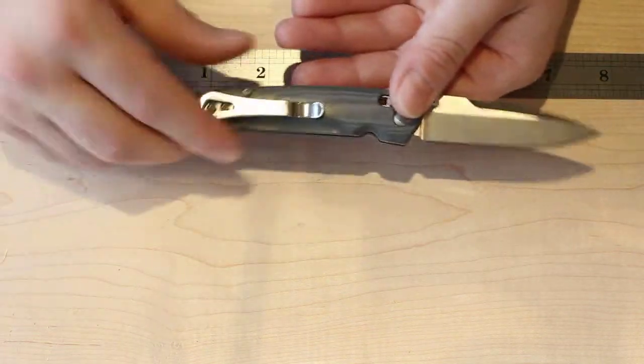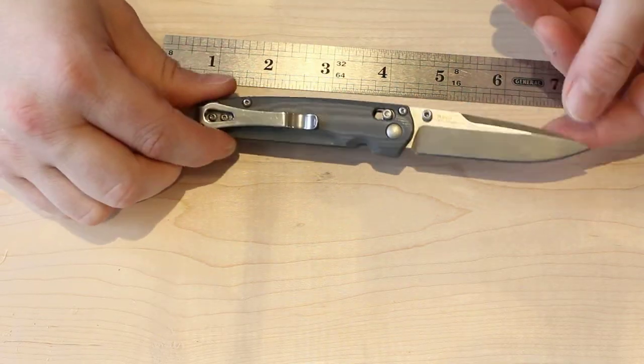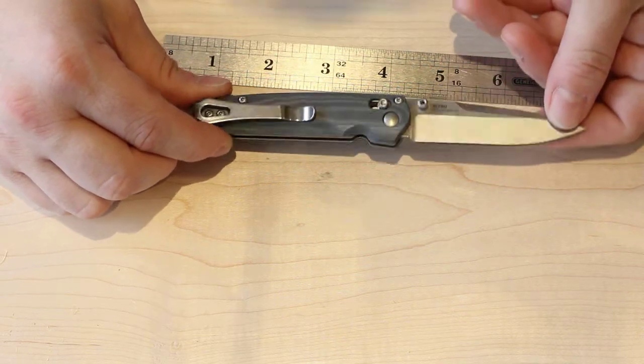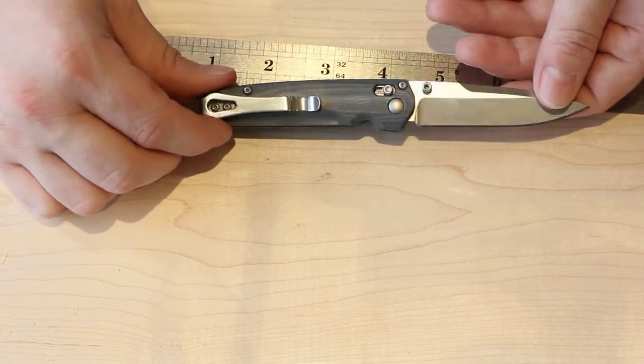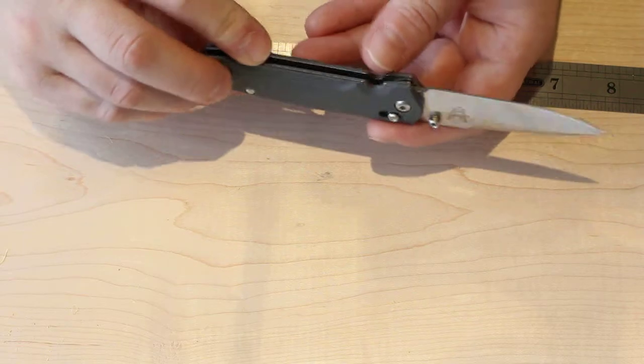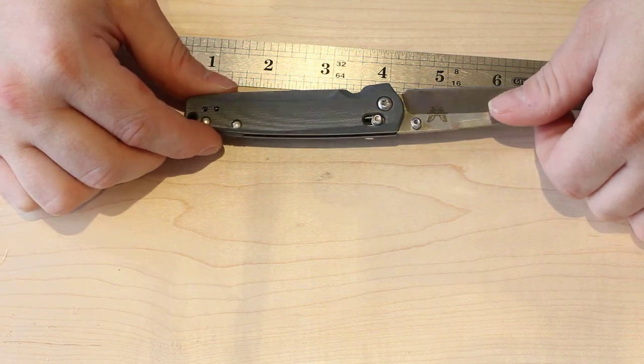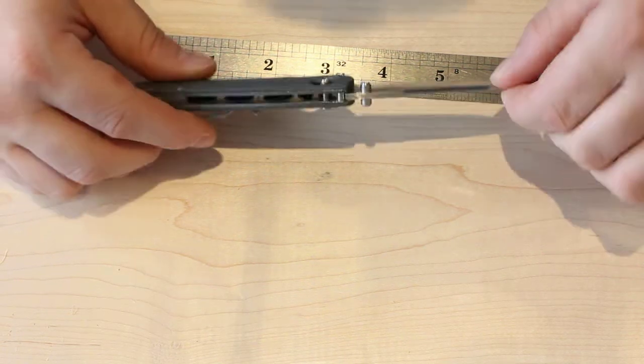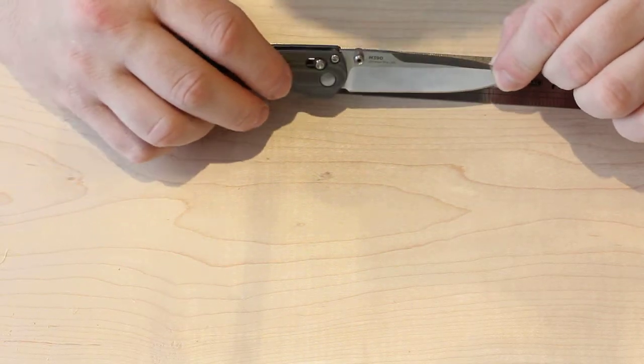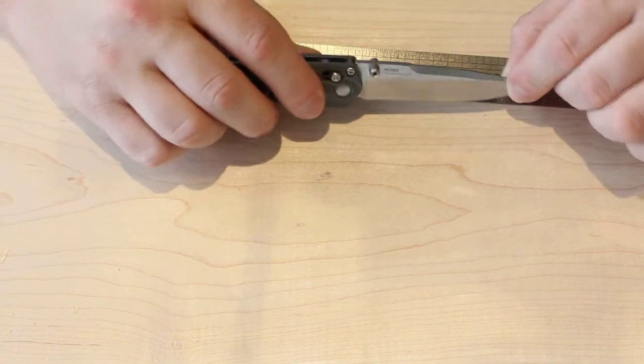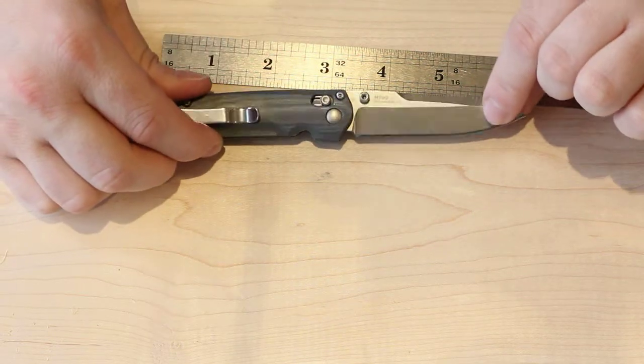The Benchmade Valet has G10 handles, and it's one of the most beautiful G10 scales I've personally ever seen. It's a very nice light gray, light grayish-bluish color with a nice white wood grain type pattern. The pattern varies from knife to knife because it's random on the sheets of G10 they cut. The G10 on this knife is very smooth, which is how I like it.